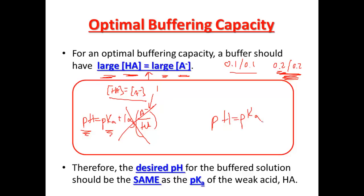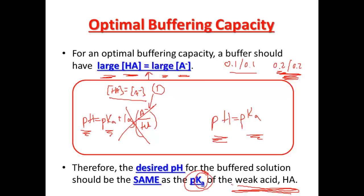Now it's not going to be exactly pH equals pKa — you usually don't have exactly 1 here — but when the ratio is close to 1, that's when your buffer does the best buffering job. It has the best capacity and can absorb the most. So the desired pH for a buffered solution should be the same as pKa, or roughly equal to it. We actually have to select the correct acid because every acid has a different Ka value, and therefore a different pKa value. A certain acid has to match up with the desired pH you're looking for.